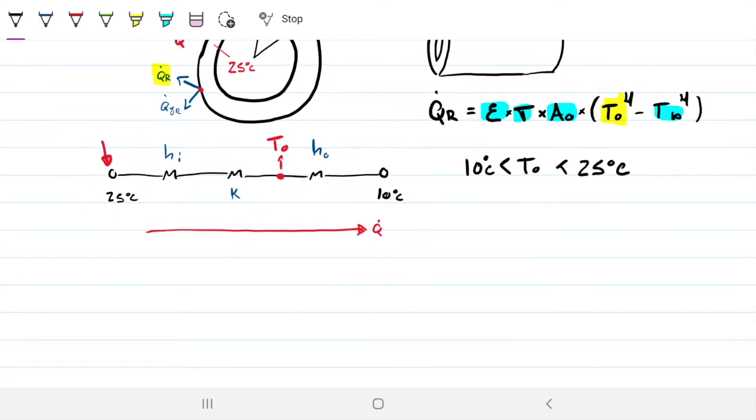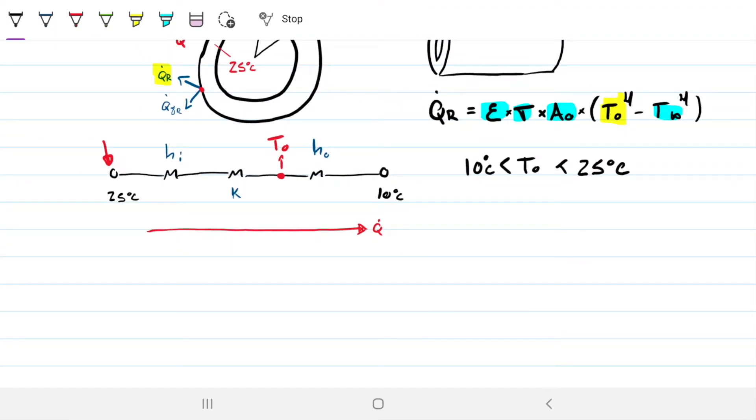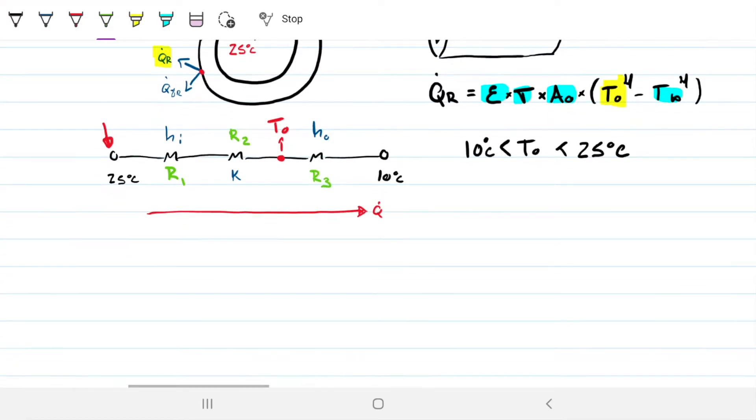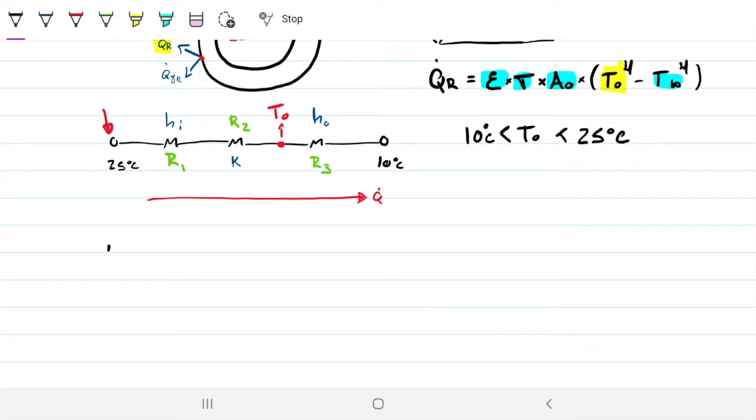Let me go ahead and start by calculating the resistances. So I'm going to calculate this guy here, which I'm going to go ahead and call R1. This will be my R2, this will be my R3. Those guys, we've done that several times already. Similarly, the ones due to convection will be 1 over convective coefficient times the area. In this case, the internal area.